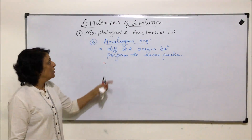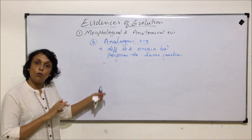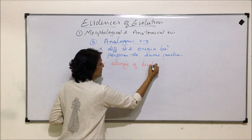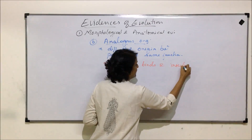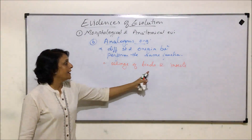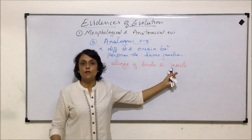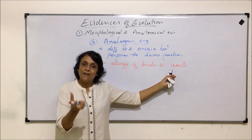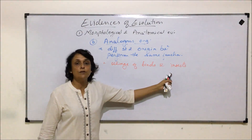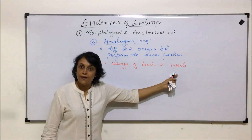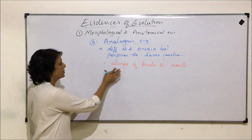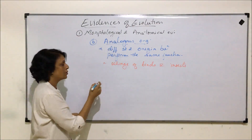For analogous organs, the function has to be the same while the structure and origin can be different. First example: wings of birds and wings of insects. Wings of birds have bones, whereas wings of insects are made up of chitinous extensions. But function-wise, both the wing of a bird and the wing of an insect help the organism fly. So function is the same but the origin is different — such organs are called analogous organs.